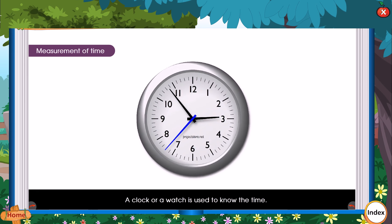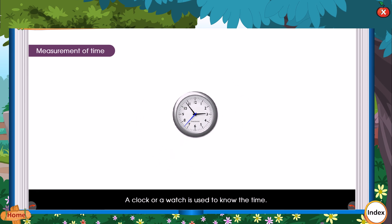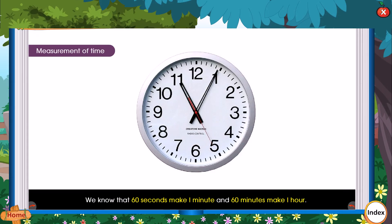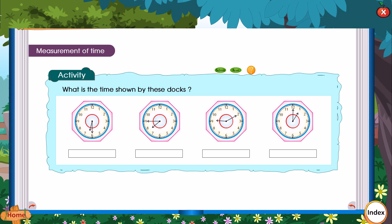We know the time. Clocks help us to measure time in hours, minutes, and seconds. We know that 60 seconds make 1 minute and 60 minutes make 1 hour. What is the time shown by these clocks?